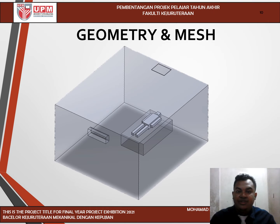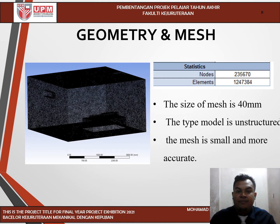This figure shows the 3D isolation room modeled in SOLIDWORKS. The geometry model room dimensions are 4 meters in length, 4.5 meters wide, and 2.5 meters high, with a volume of 45 cubic meters. The isolation room model consists of one split unit air conditioner, one inlet supply vent, one exhaust grill wall, and one patient complete with a hospital bed. The mesh was done using the ANSYS meshing software. The model type is unstructured, with an element count of 1,247,384 and 235,670 nodes. The mesh size is 40 millimeters.